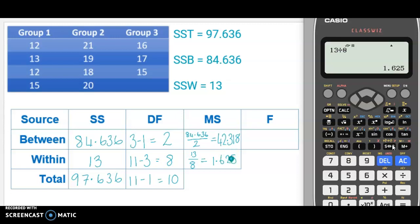And so for my F value, which is my test statistic in my hypothesis test, I am going to do the between MS divided by the within MS. And that gives me 26.042.